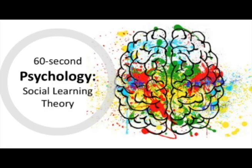Social learning theory is the idea that we learn through observation and imitation. A model performs the behavior, the observer actively focuses on it, and then copies it. Imitation is most likely to happen when the observer admires the model, such as when a child admires their parent or someone admires a celebrity.